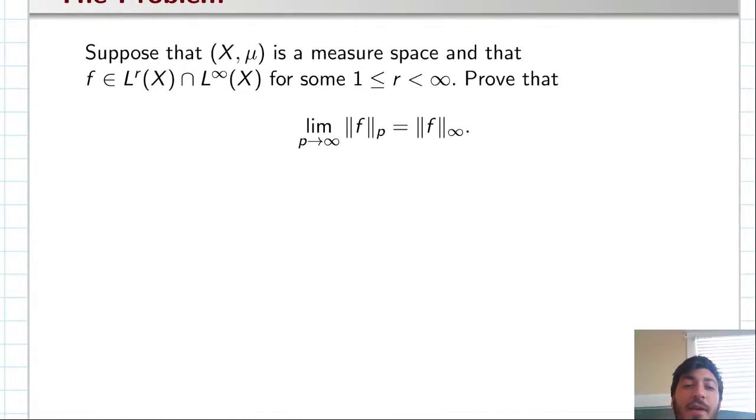So we have the kind of typical setup. We have X, mu as a measure space. In particular, X could be the real numbers, mu could be the Lebesgue measure. And we also have that f is both an L^r and an L^infinity function. I'm just writing that as it's in the intersection of the two.